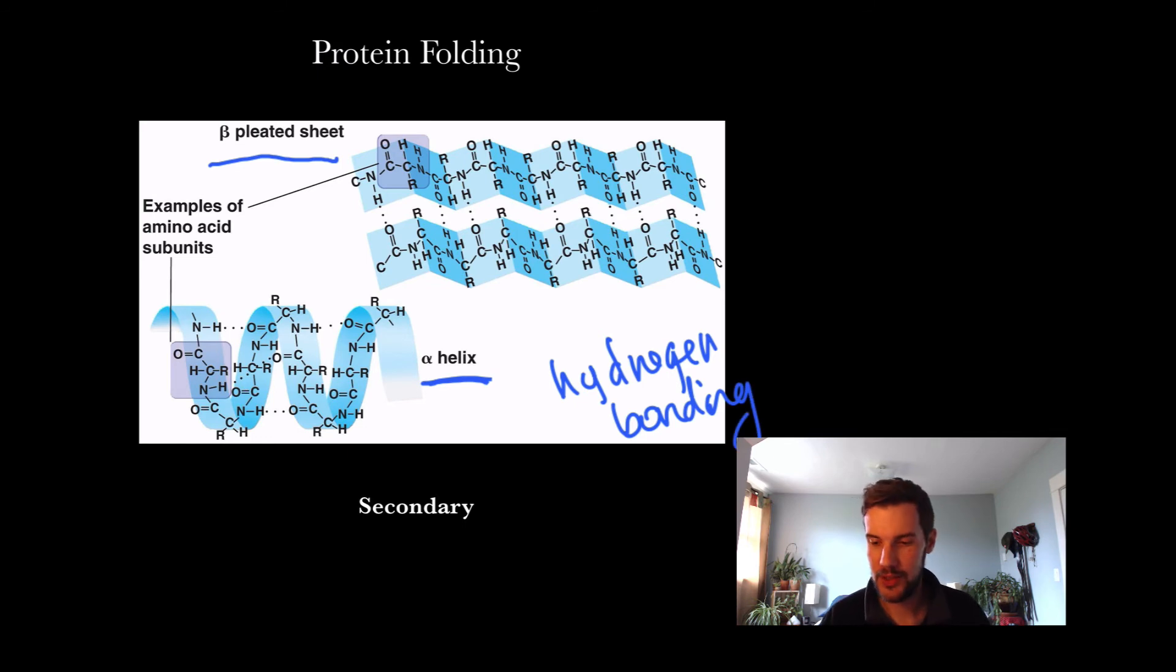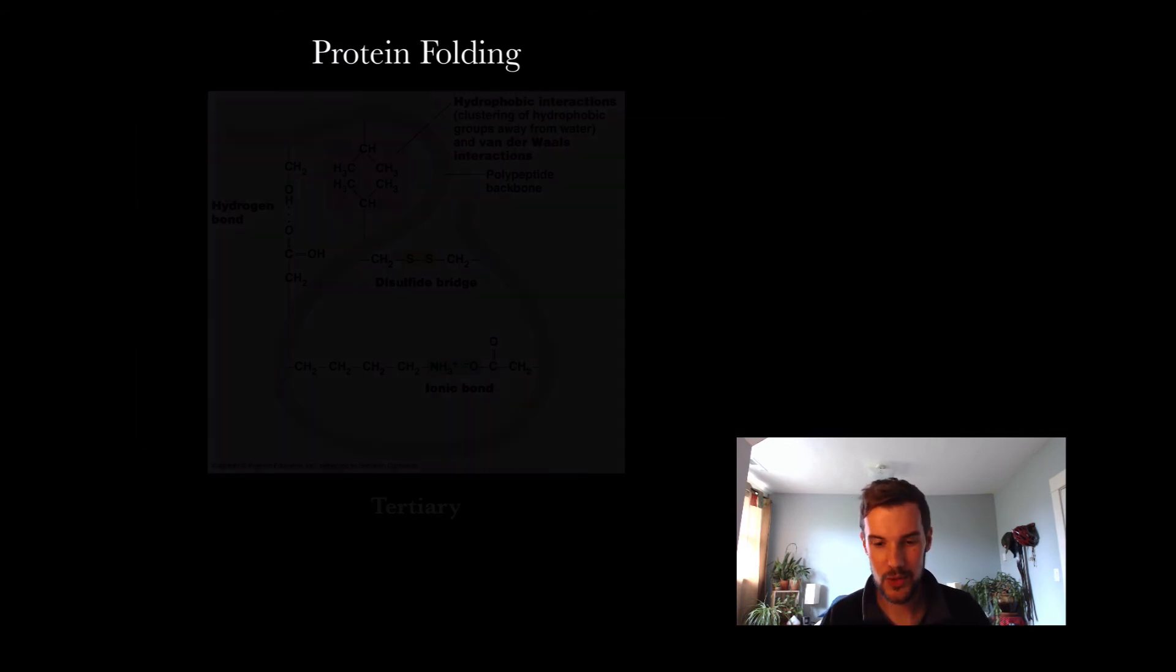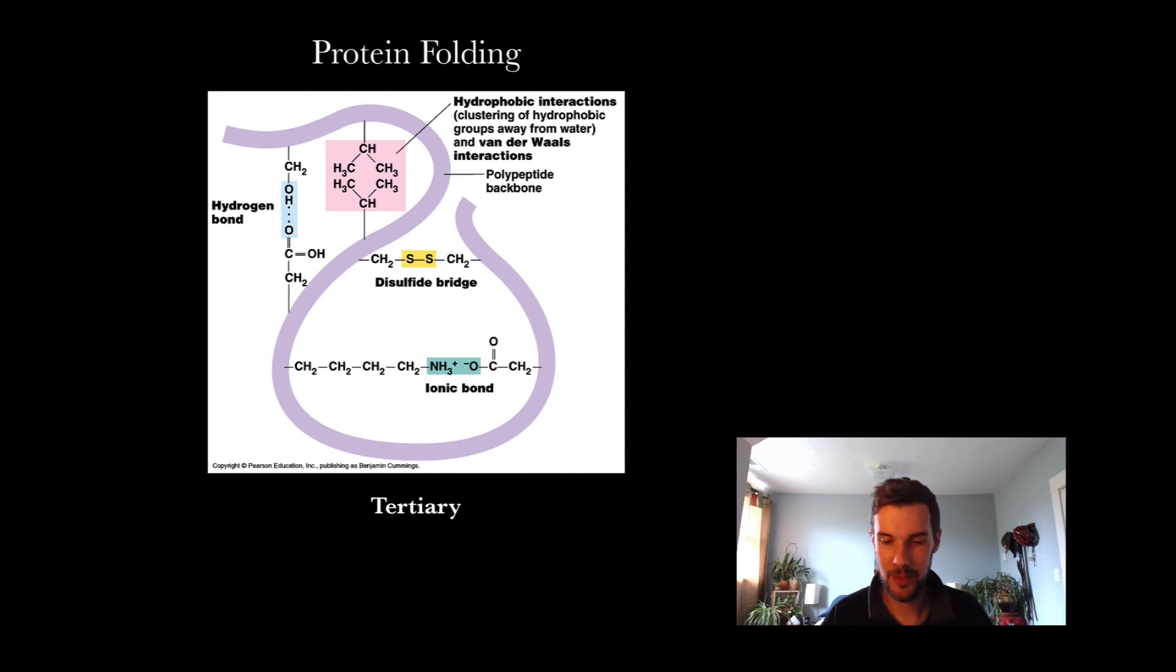That's the first part of its 3D structure. This is where the R groups start to come into play. R group interactions, depending on the order of the different amino acids, mean there are different interactions between those R groups and where they actually occur.